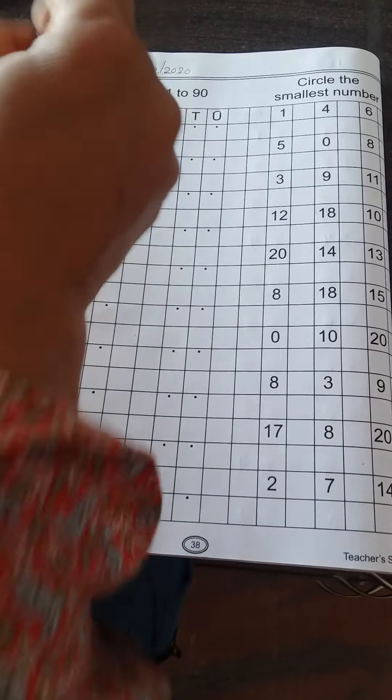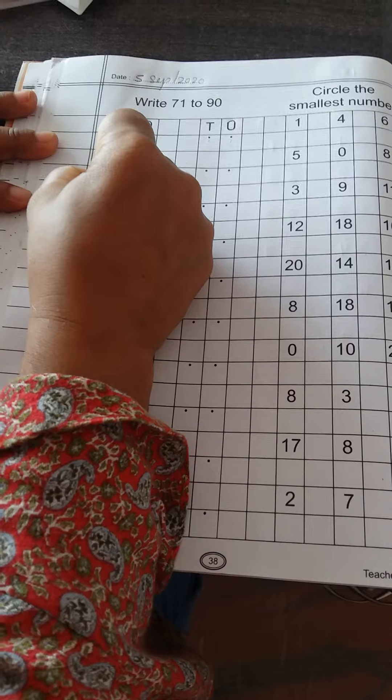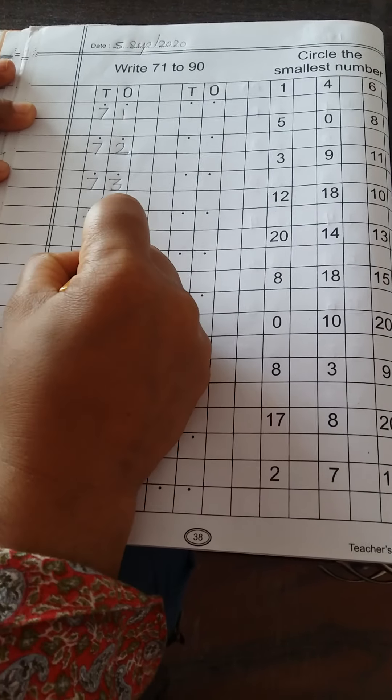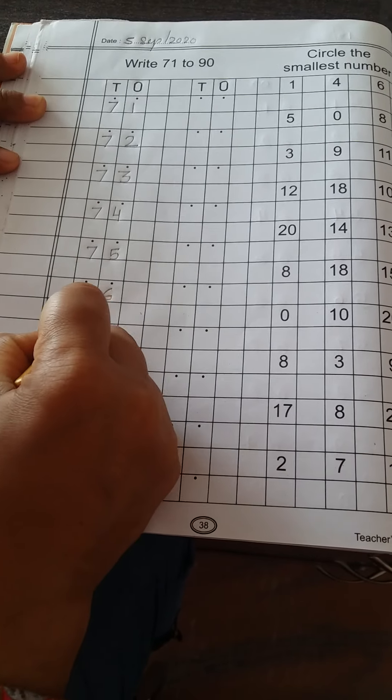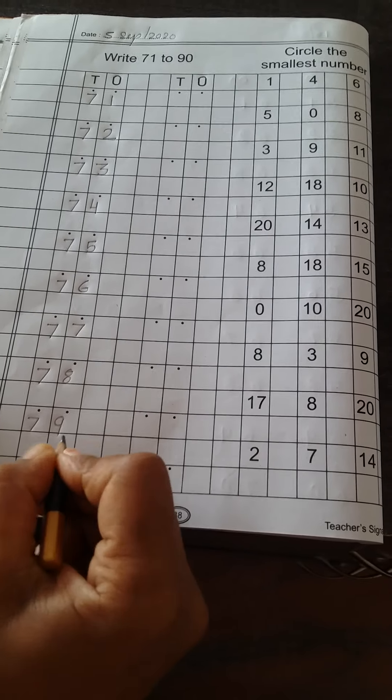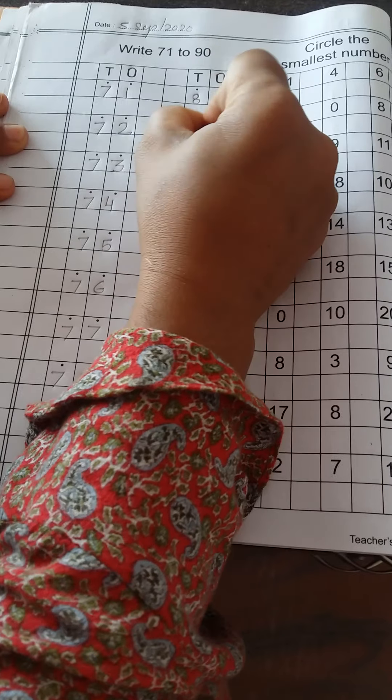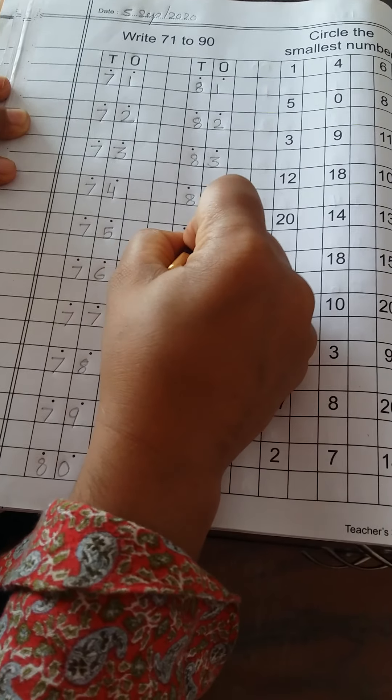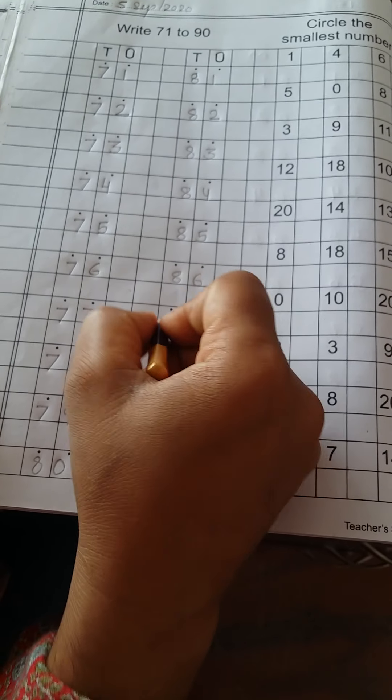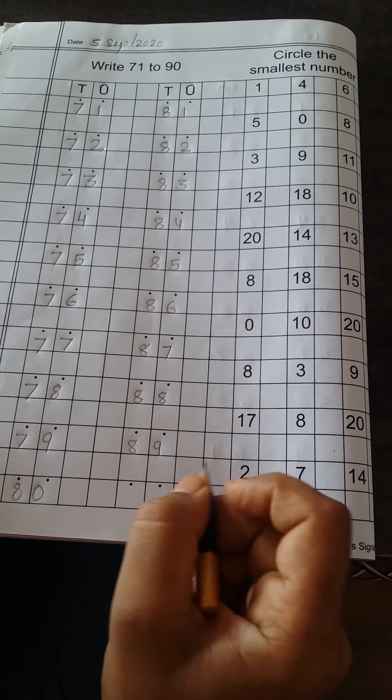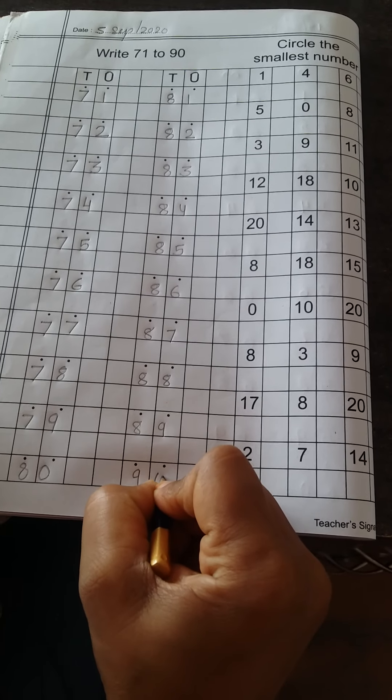Write 71 to 90 counting. 71, 72, 73, 74, 75, 76, 77, 78, 79, 80, 81, 82, 83, 84, 85, 86, 87, 88, 89, 90.